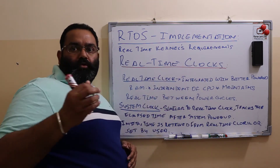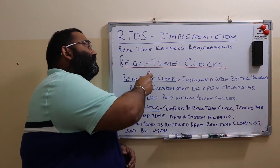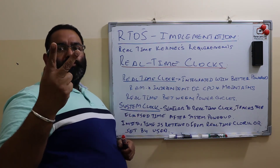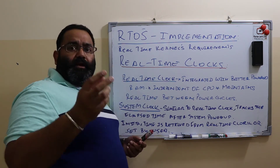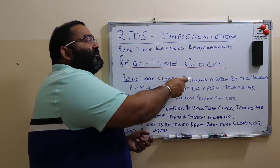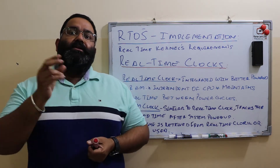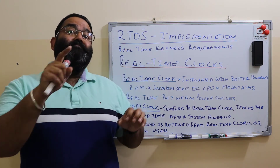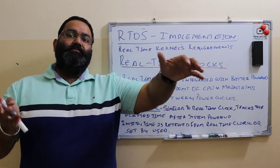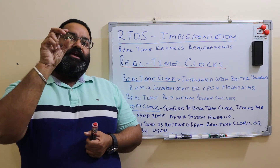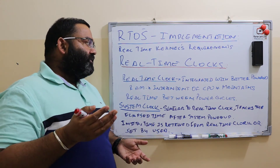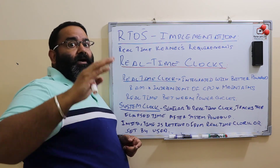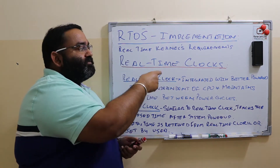The next requirement is real-time clocks. The real-time operating system must maintain a real-time clock, and nowadays most operating systems maintain two types of clock. The real-time clock is an actual clock like a real-world clock — it is integrated with battery and RAM and comes with a separate battery supply. So even when the system is switched off, that battery maintains the real time. When the system is on, it runs on system power.